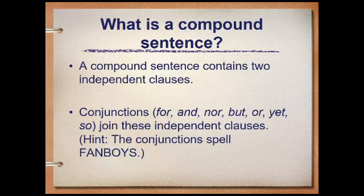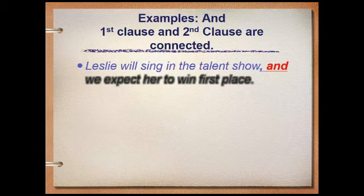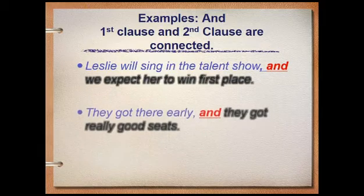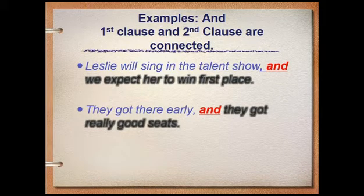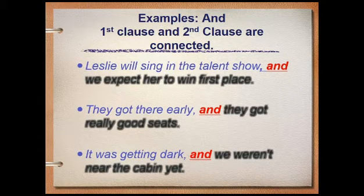Since this topic is intended for kids, I will give you examples for 'and,' 'but,' and 'or.' Use 'and' if your first clause and second clause are connected with each other. First example: 'Leslie will sing in the talent show, and we expect a great performance.' Second example: 'They got there early, and they got really good seats.' Last example: 'It was getting dark, and we weren't near the cabin yet.'